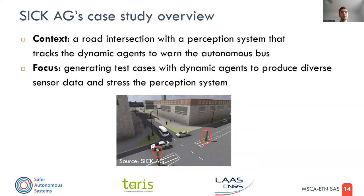The autonomous bus can decide if it needs to accelerate or decelerate. Our focus was on generating test cases where dynamic agents would produce diverse sensor data in order to stress the perception system. You can see, for example, the sensors inside the red circles.